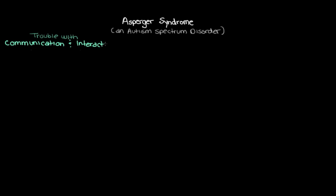Let's draw a few pictures to better understand what we mean by trouble with communication and interactions. Imagine you're having a conversation with someone and all of a sudden their smile turns upside down into a frown. That might indicate that something about the conversation — maybe something you said or did, or something the person was thinking about — upset or bothered them. But if a person with Asperger's was in that conversation, they actually might not really notice this change.